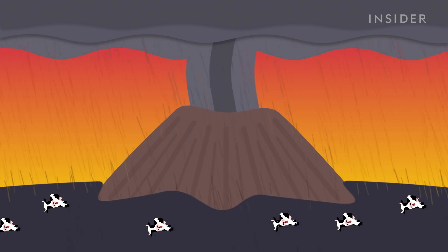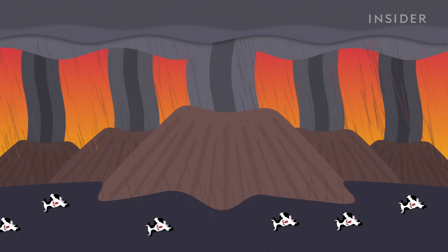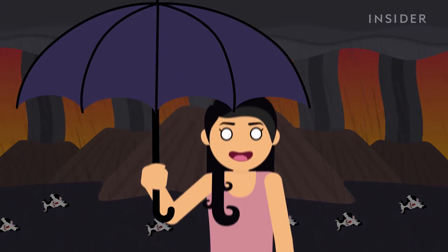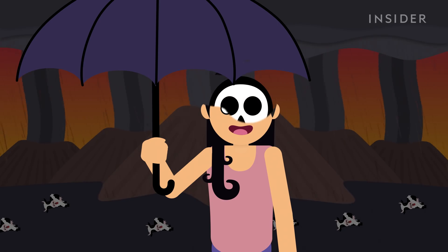So imagine that, but everywhere. And since Laki wasn't even a supervolcano, we're looking at acid rain for the next decade. Say goodbye to civilization, because it probably can't survive a decade-long global famine.